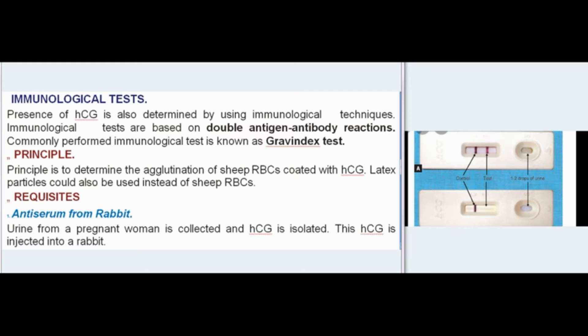The principle of the Gravindex test is to determine the agglutination of sheep RBCs coated with HCG. Latex particles could also be used instead of sheep RBCs.